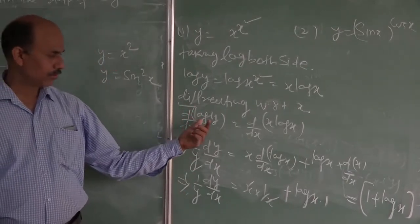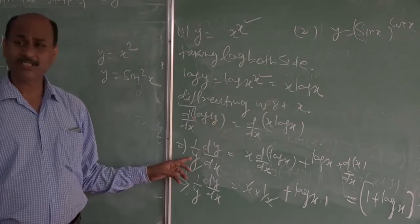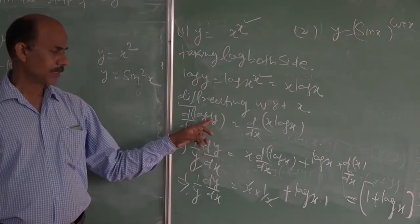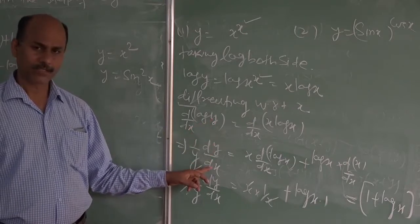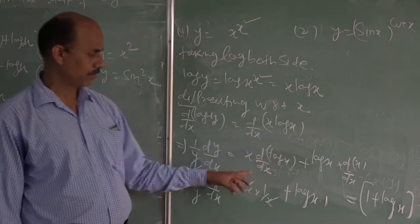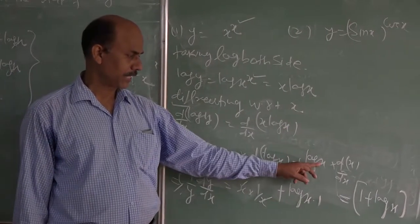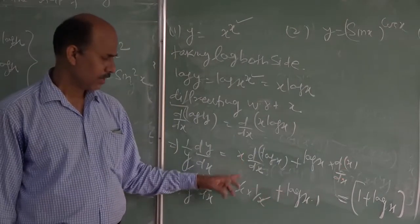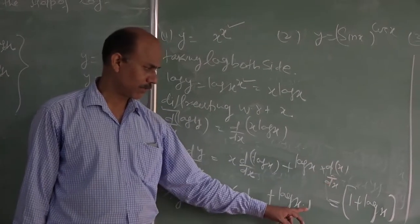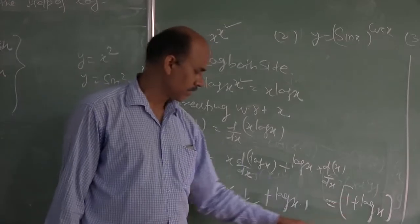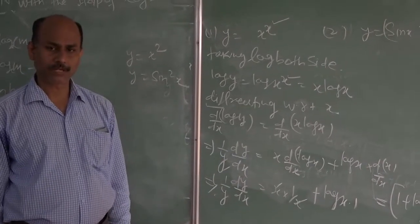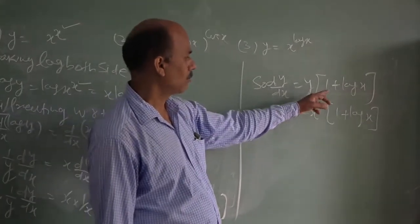Now take care of the left side first. The differentiation of log y — just like log x differentiates to 1/x — gives 1/y · dy/dx. On the right side, x·log x is a product, so use the product rule: first function times differentiation of second, plus second times differentiation of first. That gives x · (1/x) + log x · 1, which simplifies to 1 + log x. So dy/dx = y(1 + log x).